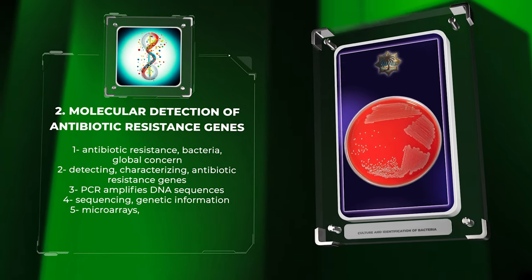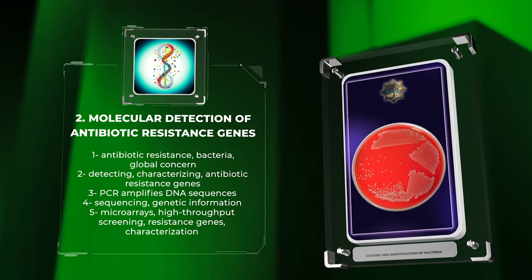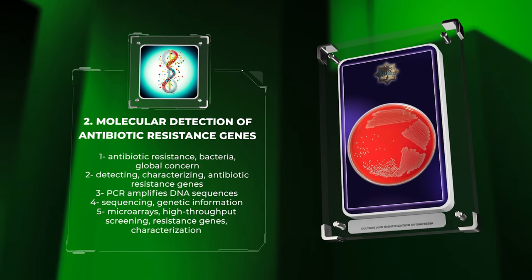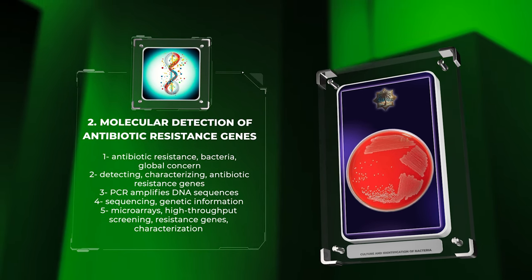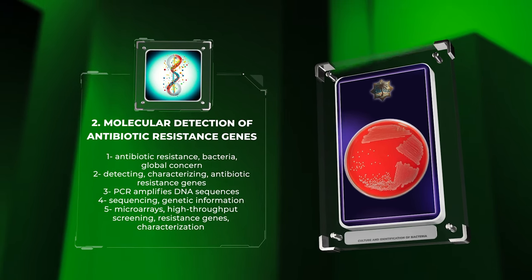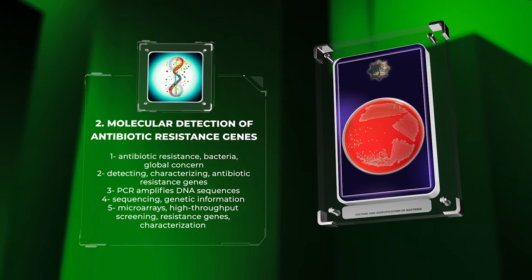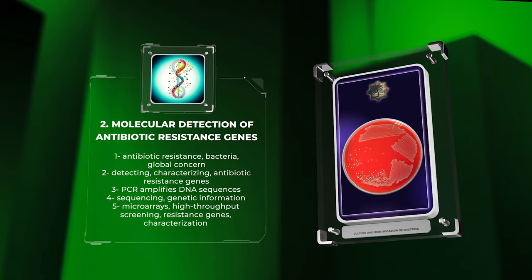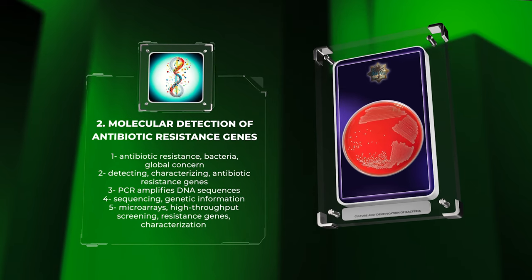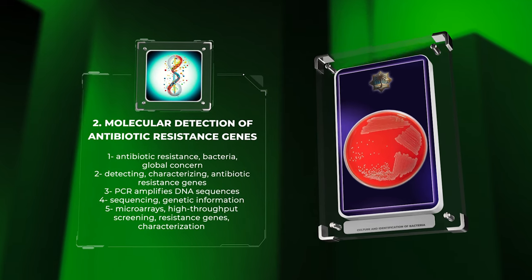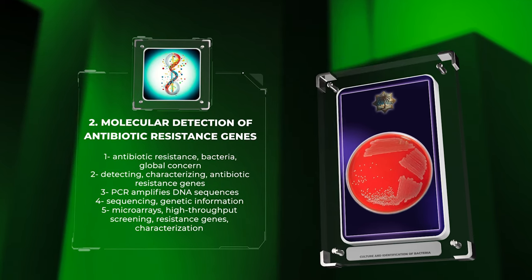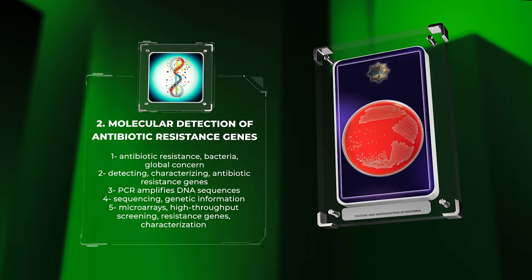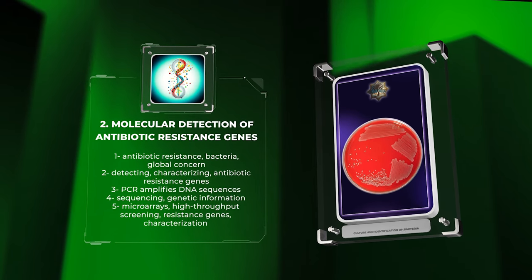The rise of antibiotic resistance in bacteria is a global concern. Detecting and characterizing antibiotic resistance genes is crucial for effective treatment strategies. PCR amplifies specific DNA sequences, while sequencing provides genetic information. Microarrays enable high-throughput screening of resistance genes, aiding in their characterization.